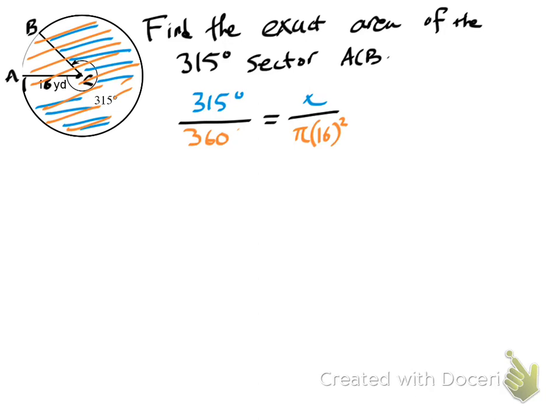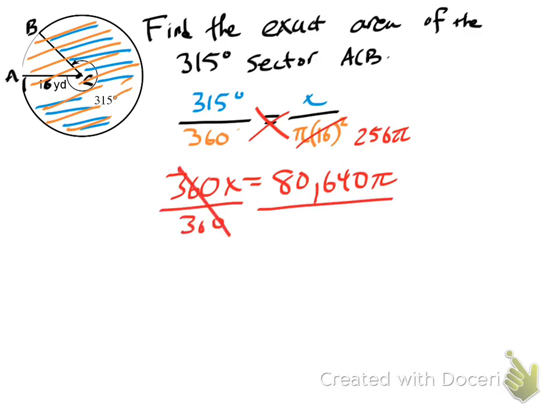So once again, simplifying this proportion would give us 360x equals, let's see, this is 256π. So 256π times 315 will give us a very large number, 80,640π. Divide by 360 again, and we get 224π.